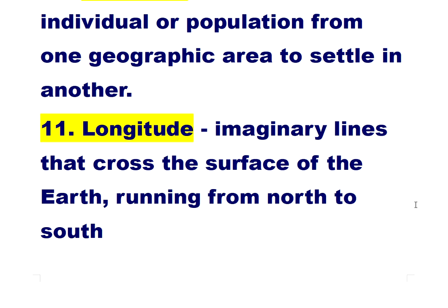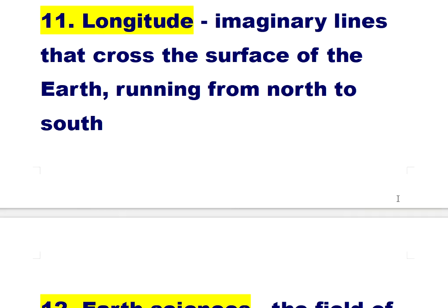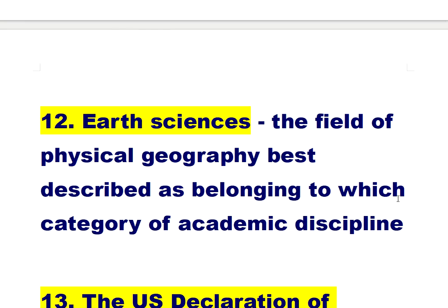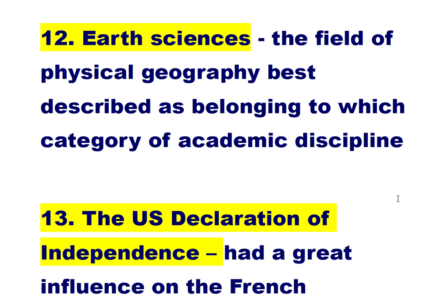Number eleven: longitude — imaginary lines that cross the surface of the earth running from north to south. Number twelve: earth sciences — the field of physical geography is best described as belonging to which category of academic discipline.